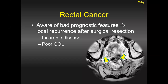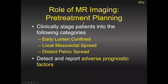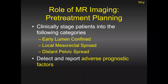Accurate staging and appropriate treatment are the key things that will prevent local recurrence. We do MR to distinguish patients with early lumen-confined disease — who can get surgical therapy — from those with local spread and distant pelvic spread, who require more aggressive modes of therapy prior to surgery. We also need to find specific imaging markers in the primary tumor that predict adverse prognostic outcome. That, in a nutshell, is the role of MR in rectal cancer.